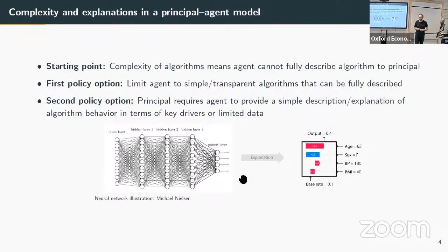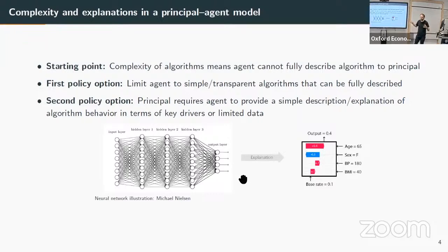[Question: Is the first policy option what banks currently do?] For credit scoring, some banks still use logistic regression-based approaches because that's what they've always done, with established procedures with the regulator. Whether a simple decision tree or logistic regression is actually easy to understand is debatable—even logistic regression with 10 variables can be hard to interpret. Currently, in some high-risk cases, especially banks, we're in an equilibrium relying on relatively simple models because regulators are nervous about moving to fully non-parametric approaches.